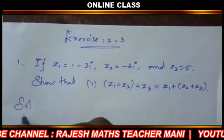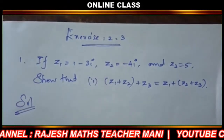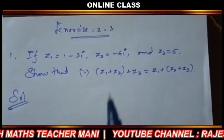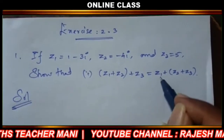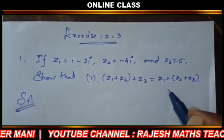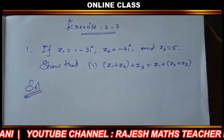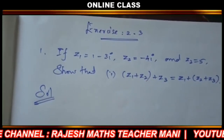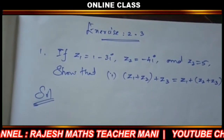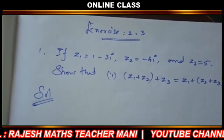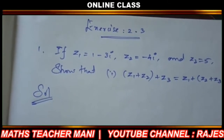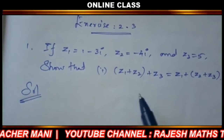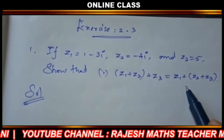This one is the addition associative property. For any three complex numbers z1, z2, and z3, that is the associative property.